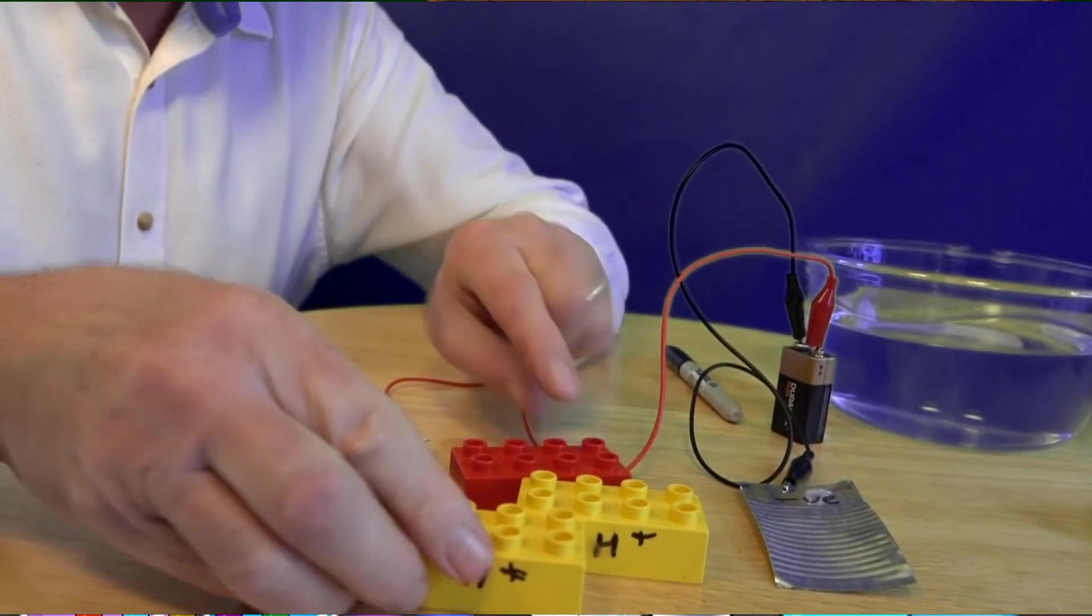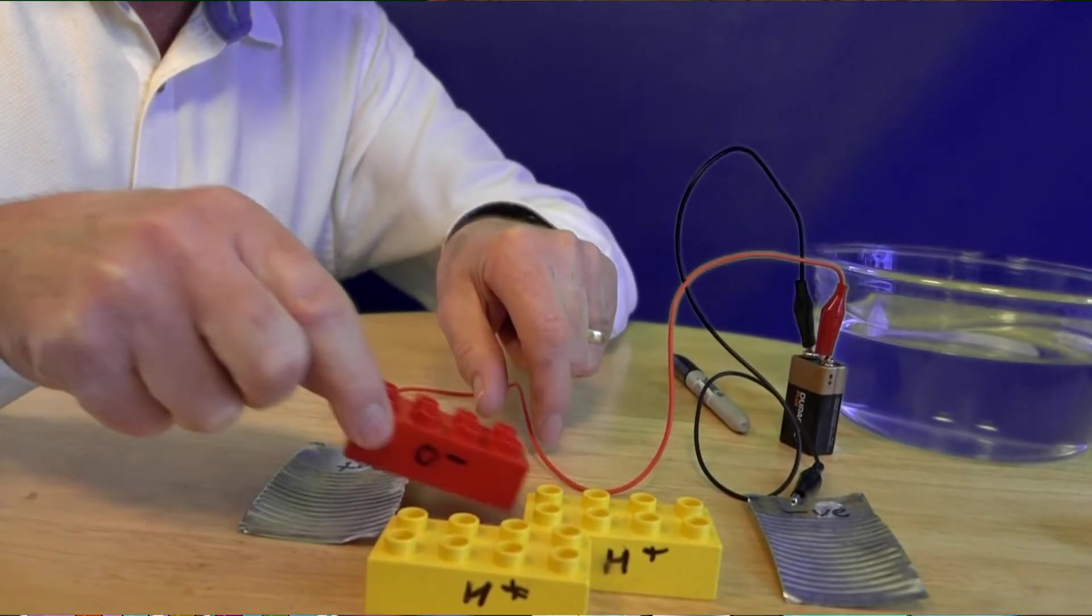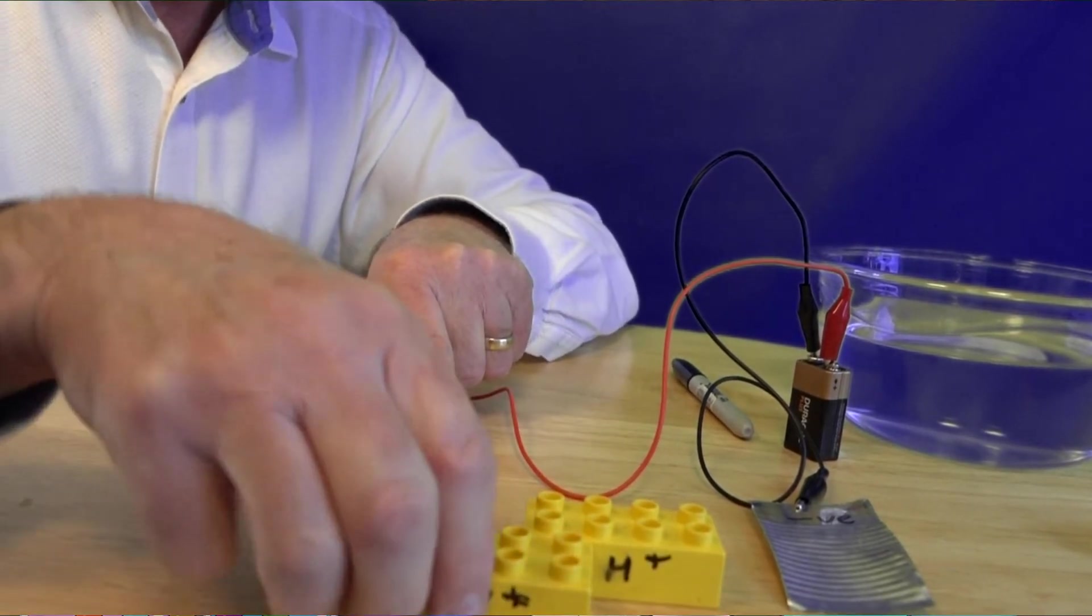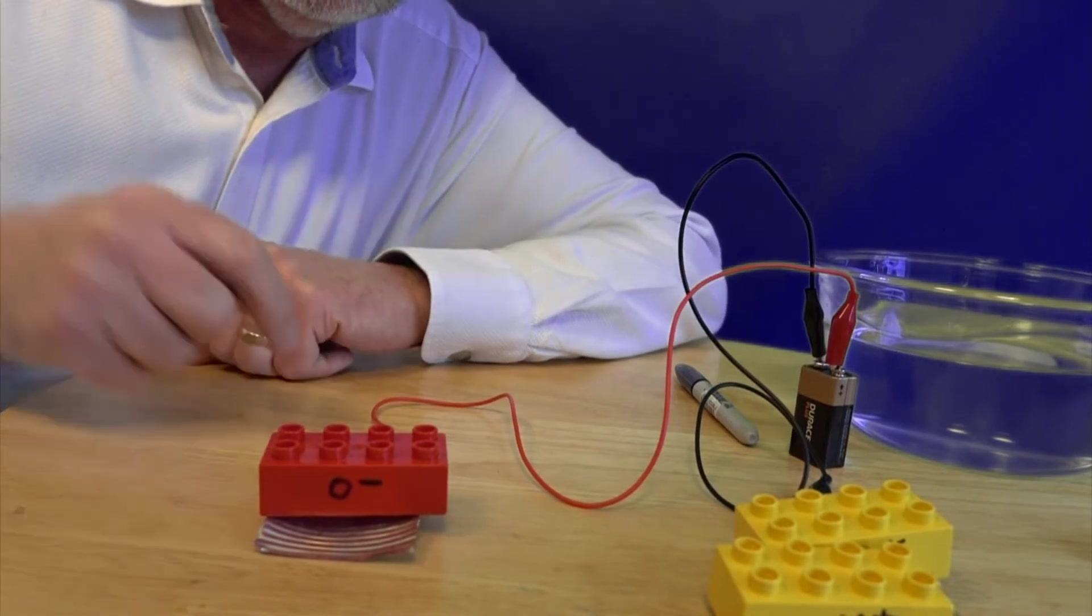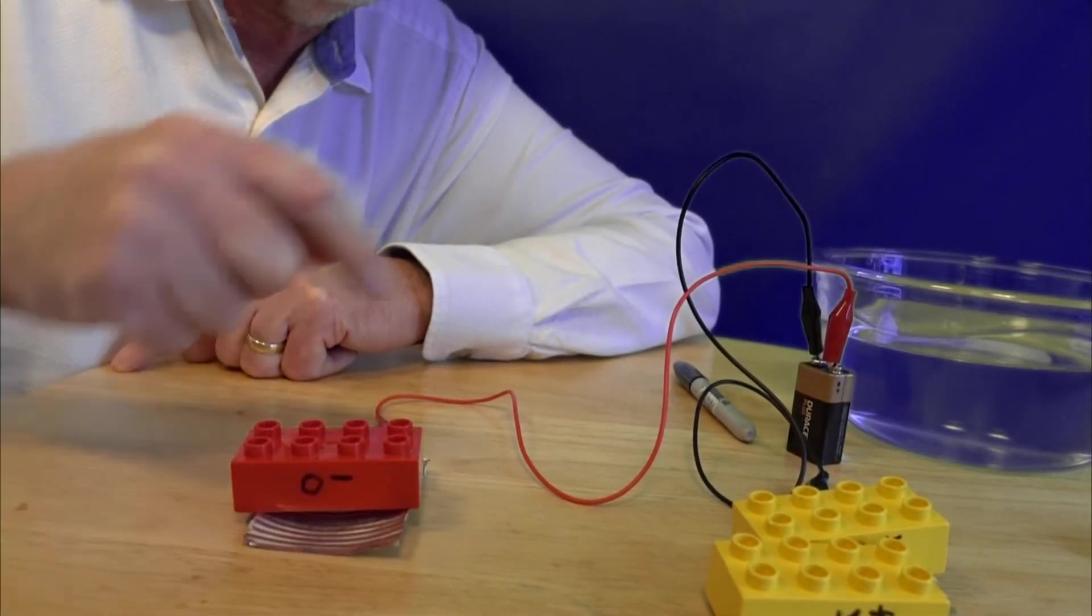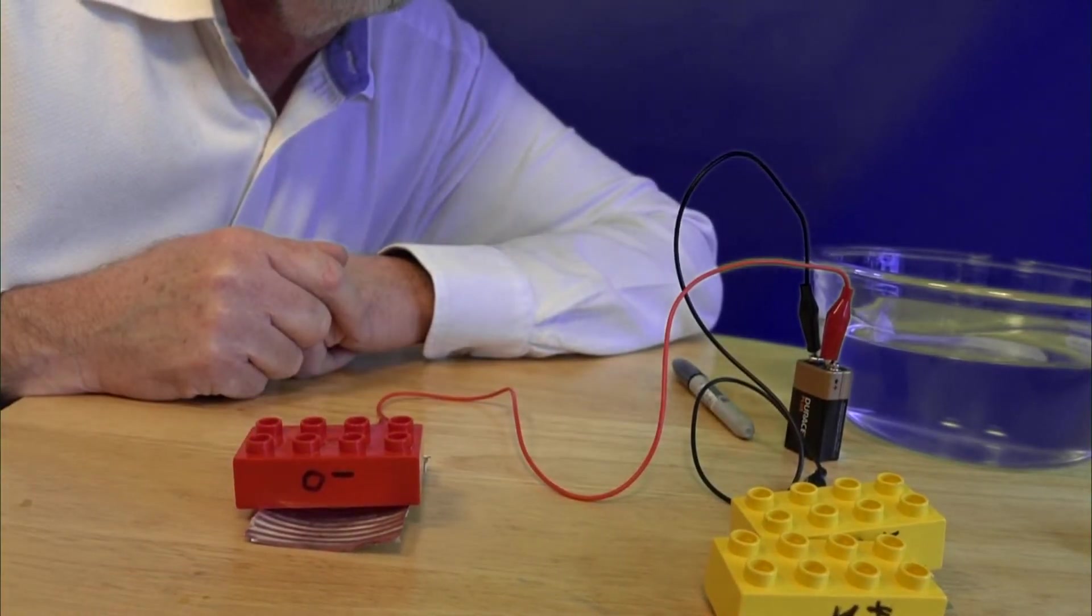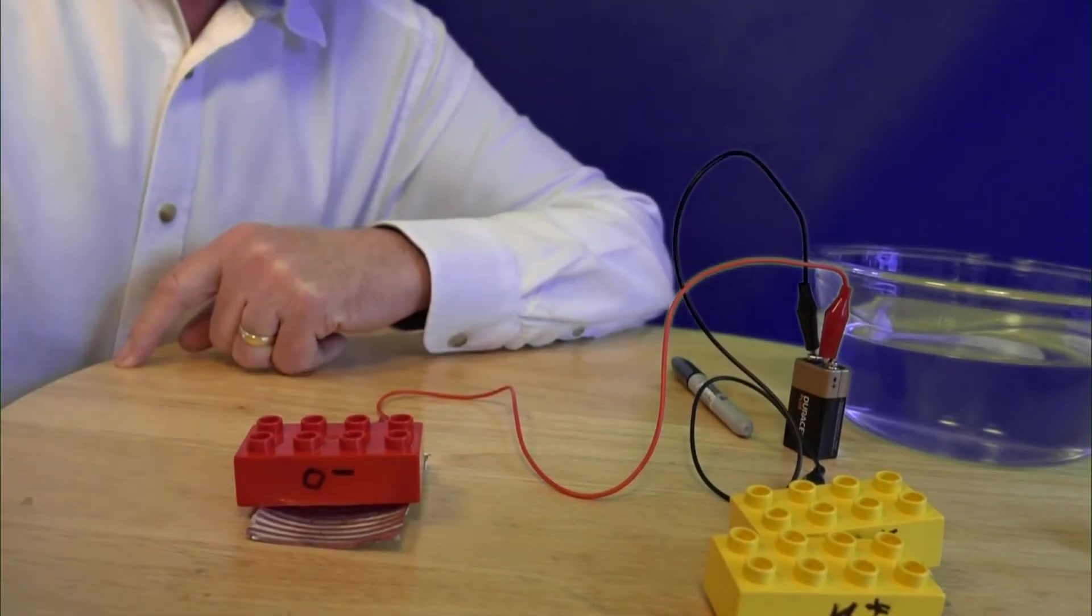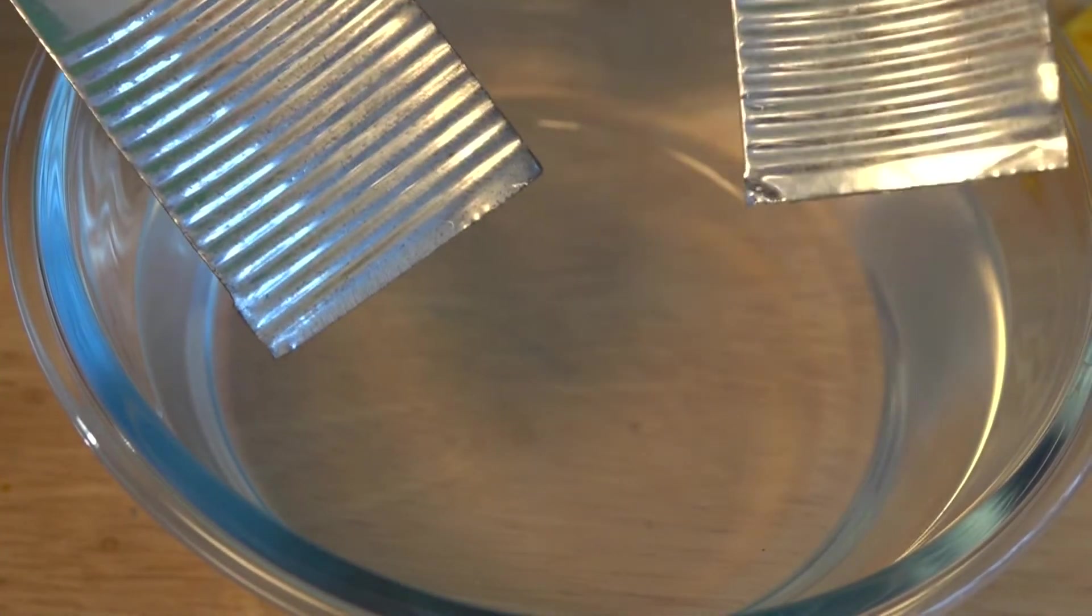They don't want to be split apart remember but they will be because the minus is going to be attracted to the positive over here, the plus, and the plus hydrogens are going to be attracted over to the minus. So what will happen is this will split up the water and it will send the oxygen over to here and it will send the hydrogen over to here. So what we should see is little bubbles of oxygen on the plus over here and little bubbles of hydrogen on the minus over here. Shall we see if it works?